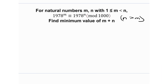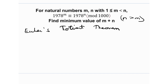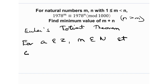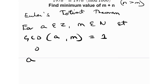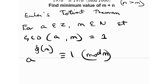Before we jump into this, let me just remind you what Euler's Totient theorem is. So Euler's Totient theorem basically says that for an integer a and a natural number m such that gcd(a, m) = 1 — meaning they are relatively prime — we have the relation: a raised to phi(m) is congruent to 1 modulo m.